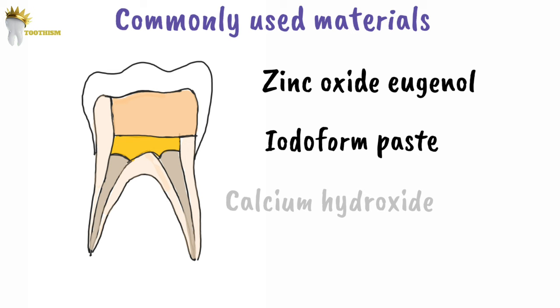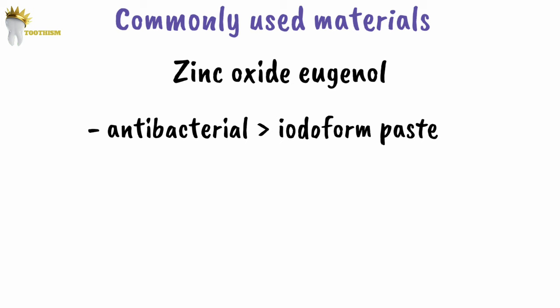Zinc oxide eugenol paste has antibacterial activity which is greater than that of iodoform-containing paste. The average success rate with this material is 83%, and studies found no significant difference when zinc oxide eugenol was compared with either calcium hydroxide or iodoform paste.